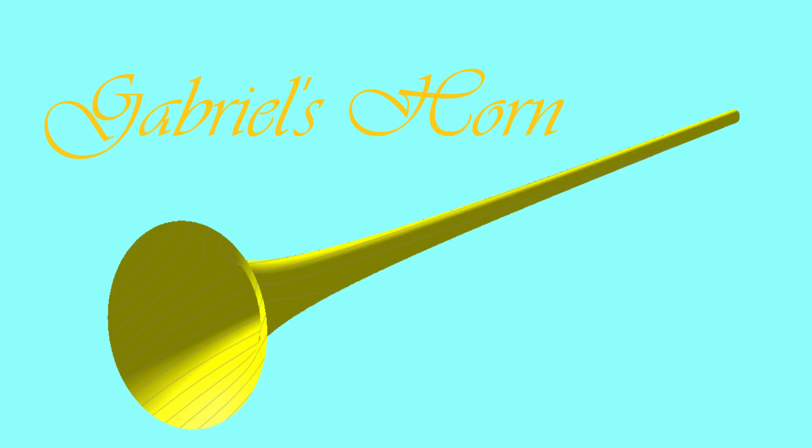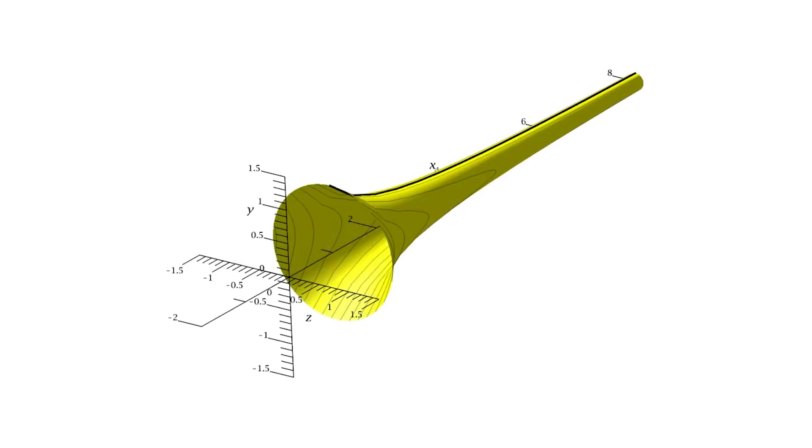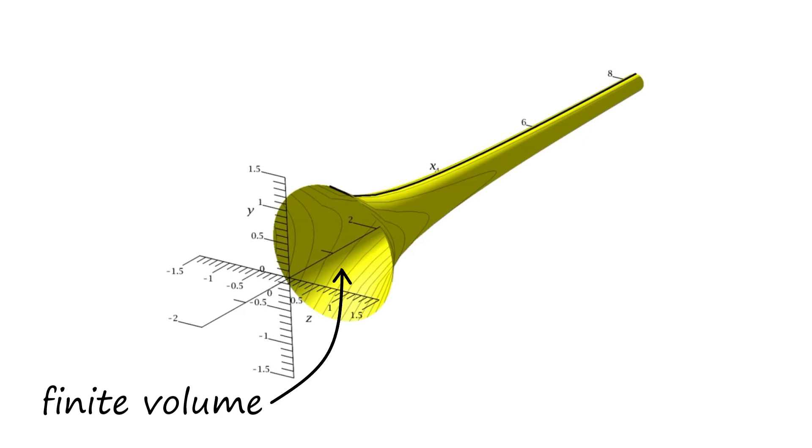This shape is called Gabriel's Horn, and it is one of the weirdest shapes in mathematics. It's formed by taking the graph of y equals 1 over x from x equals 1 to infinity and revolving it around the x-axis. What's amazing about this shape is that it holds a finite volume. Its volume is actually equal to pi, but it has infinite surface area.